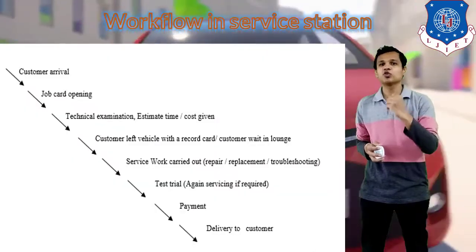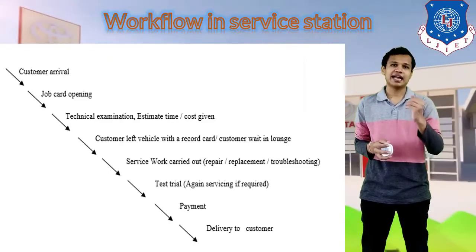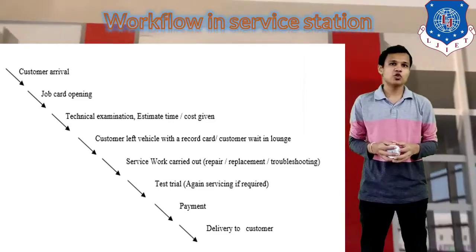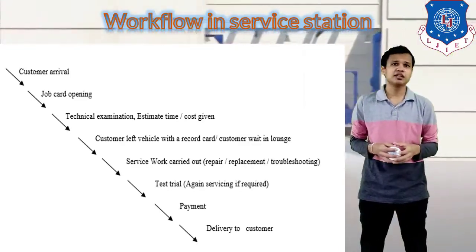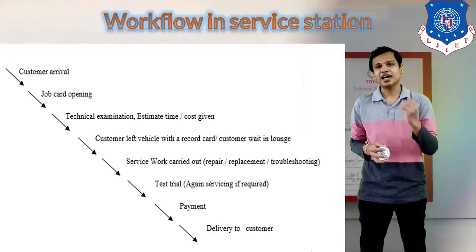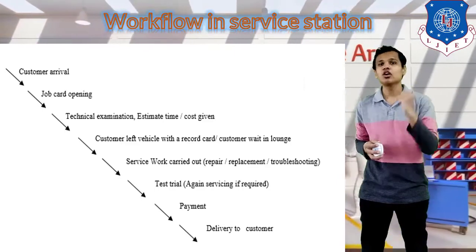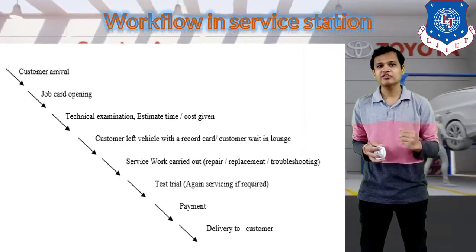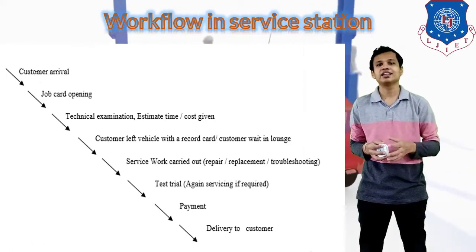Let's see the workflow in the service station — how the flow goes. First, the customer arrives at the service station. The job card will be opened and all details filled in. Next, the examination of the vehicle will be done by the supervisor. After the examination, the estimated time of delivery and estimated cost of service will be given. The customer will then leave the vehicle with the record card, or they can be asked to wait in the lounge.